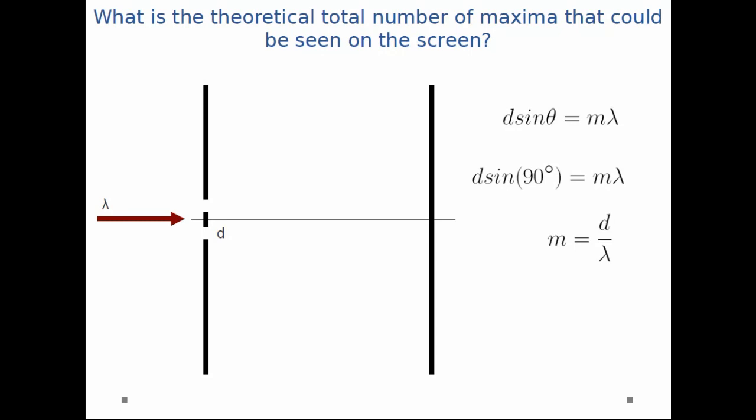We can rearrange our equation and get m = d/λ. But we have to be careful about this. If m is a whole number, the calculation makes sense—we could technically see a bright spot infinitely far away, or at least there would exist a bright spot infinitely far away.